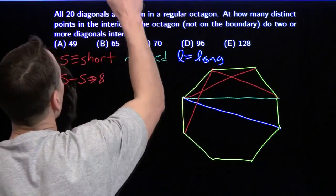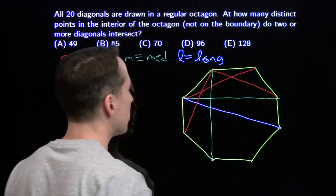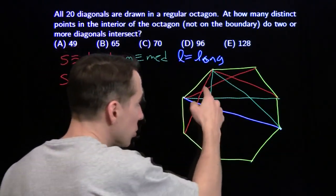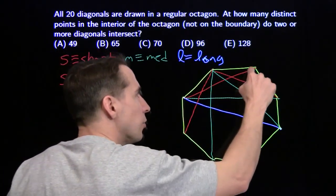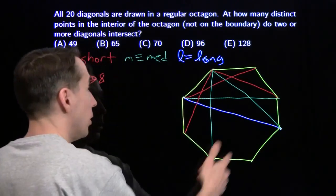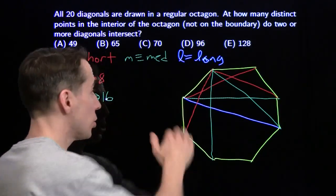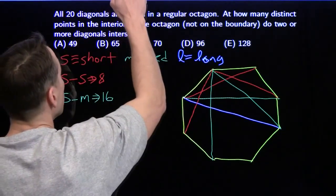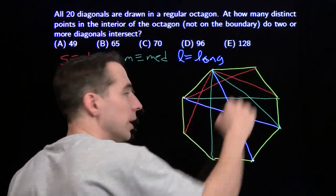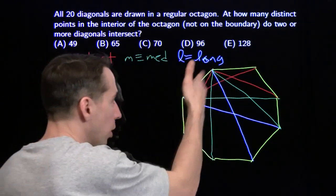Now let's look at where a short diagonal can intersect a medium diagonal. Each short diagonal can intersect with two medium diagonals, giving two new intersection points. Those two points are different from the short-short intersection points. There are eight short diagonals total, so that gives us 8 times 2 — 16 intersections between a short diagonal and a medium diagonal. Moving on to short diagonals and long diagonals: for each short diagonal, there's one long diagonal that cuts it right in half, giving us eight new intersection points, one for each short diagonal.